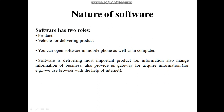What is the nature of software? Software has two roles: the first is as a product, and the second is as a vehicle for delivering that product. Software can run on your mobile phone as well as your laptop or computer. Software delivers the most important product — information. It also provides a gateway for acquiring information. For example, a browser is software through which, with the help of the internet, you can acquire information.